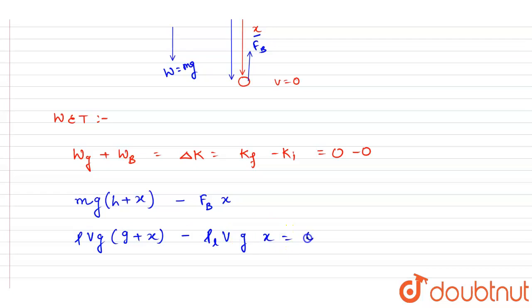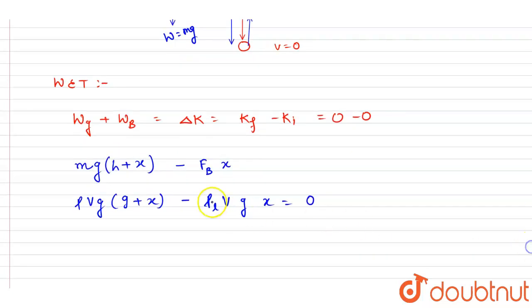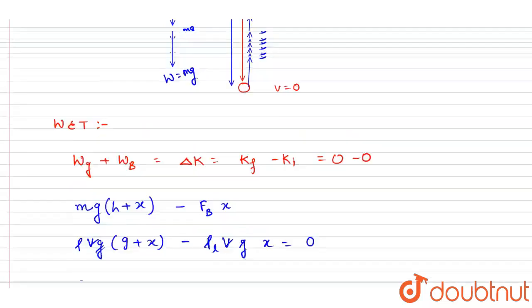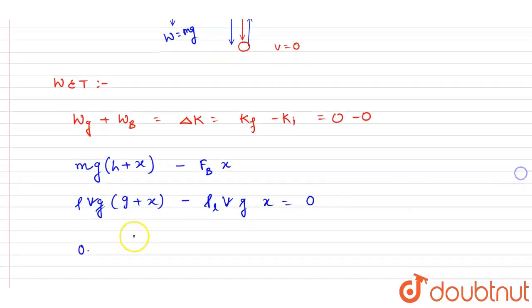into x. This will be the work done. Now if you see, Vg will get cancelled out. Rho liquid is 10 to the power 3 and rho object is already given in the question, it is 0.4 into 10 to the power 3.